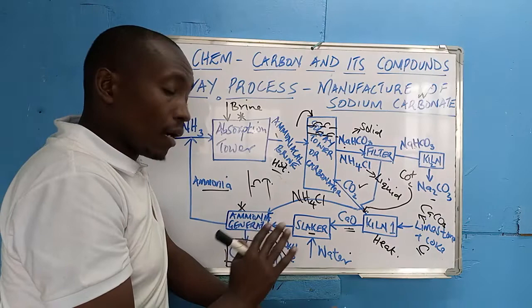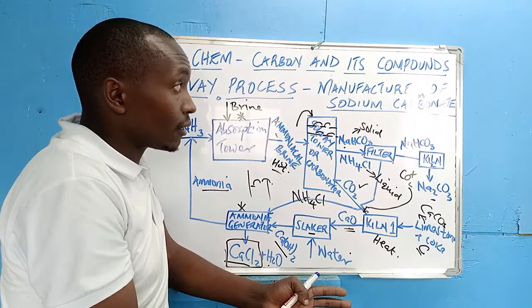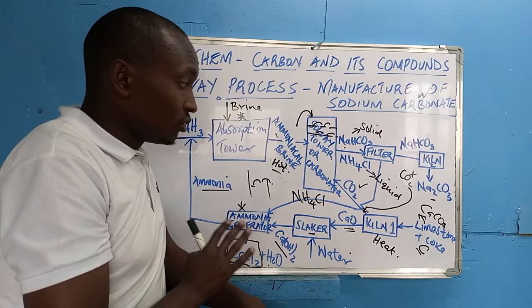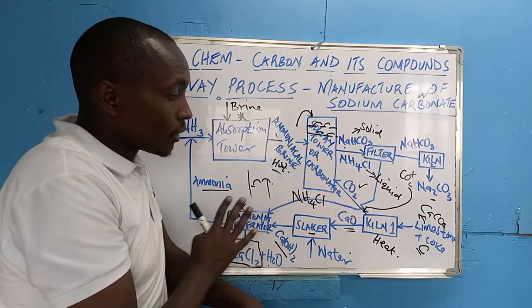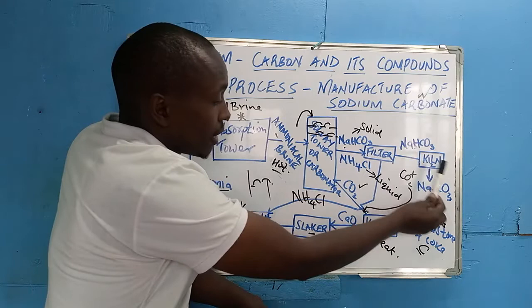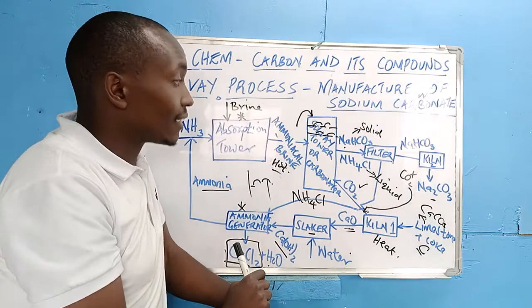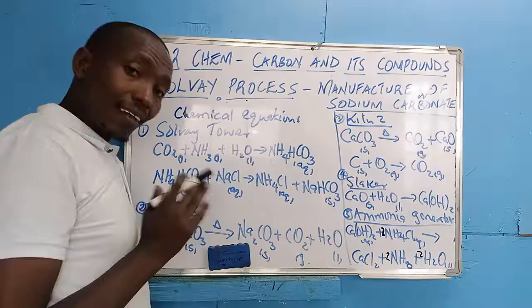Sodium carbonate has several uses: it can be used in the paper manufacturing industry, the glass making industry, and to soften hard water, among other uses. Now I want to take you through the chemical reactions taking place in all the chambers, and write the chemical equations to summarize the Solvay process.